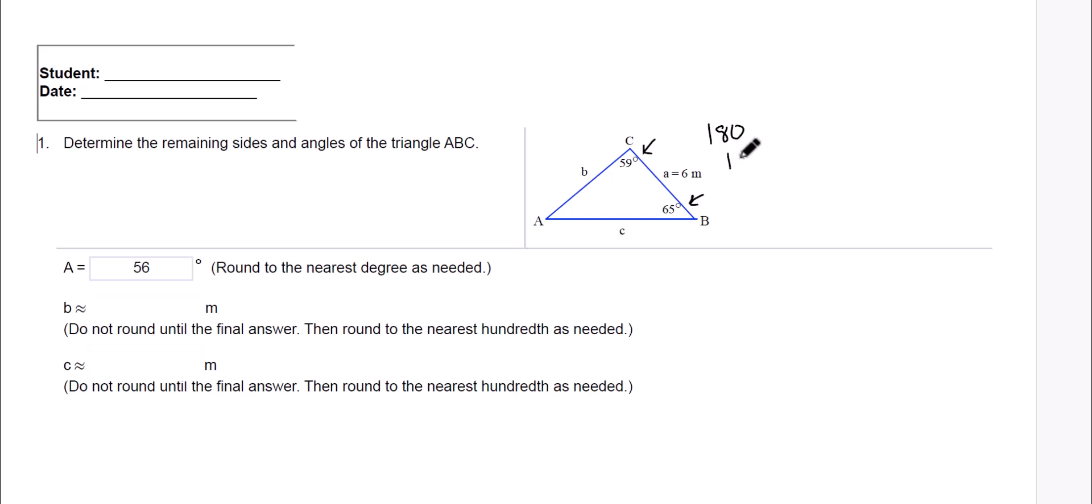To figure out angle A, all I have to do is take 180 minus 59 minus 65. And what does that give us? Yeah, 56 degrees. So right away, I know angle A is 56 degrees.